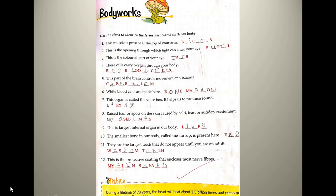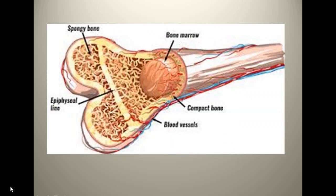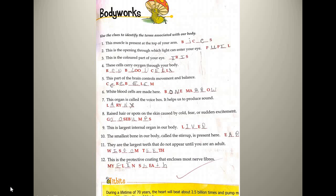The next question is: white blood cells are made here. It is the part of the body where white blood cells are made. Just as there are red blood cells, there are white blood cells also in our body. That part is bone marrow — inside the bone there is a semi-fluid thing called bone marrow, as you can clearly see in the picture. Bone marrow is the part where white blood cells are produced.